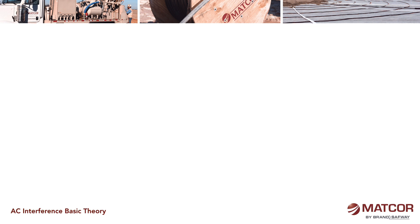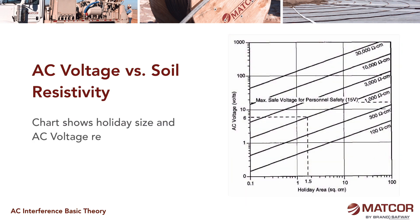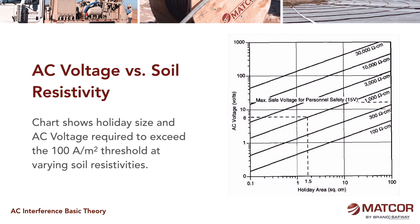You can chart this out — a chart of holiday size versus AC volts at different soil resistivities — and see where you fall into a corrosion environment.